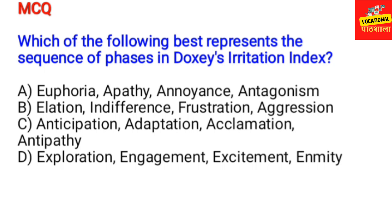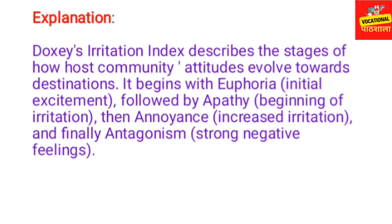Now here is a practice MCQ: Which of the following best represents the sequence of phases in Doxy's Irritation Index? Option A: Euphoria, Apathy, Annoyance, Antagonism. Option B: Elation, Indifference, Frustration, Aggression. Option C: Anticipation, Erection, Acclimation, Antipathy. Option D: Exploration, Engagement, Excitement, Enmity. The correct answer is Option A — Euphoria, Apathy, Annoyance, Antagonism. Doxy's Irritation Index describes how host community attitudes evolve, beginning with Euphoria, then Apathy, then Annoyance, and finally Antagonism with strong negative feelings.